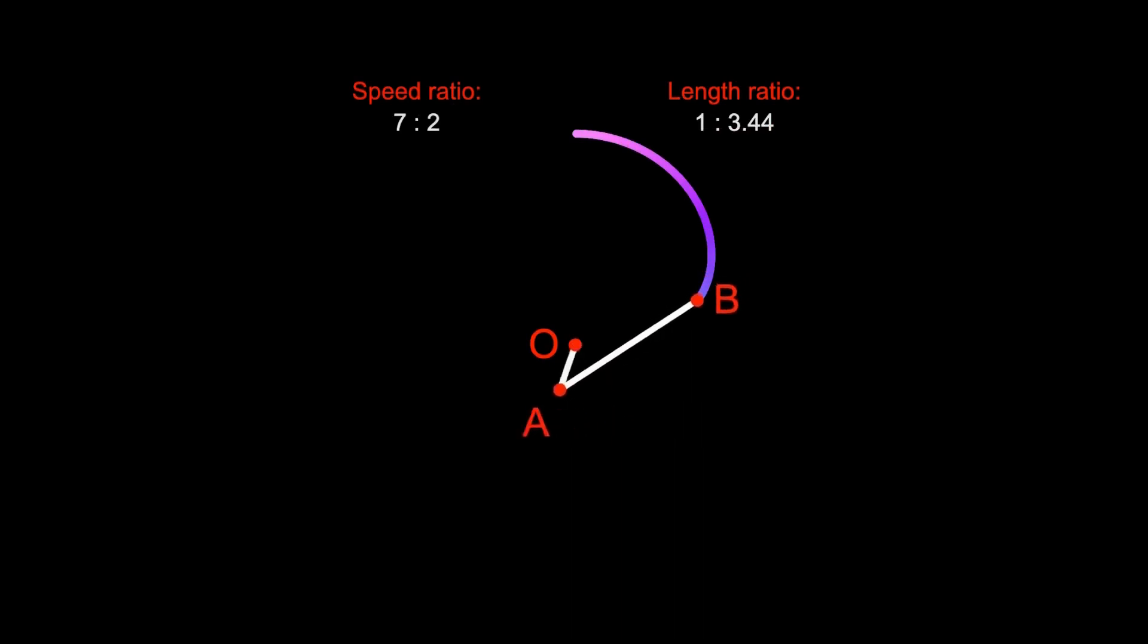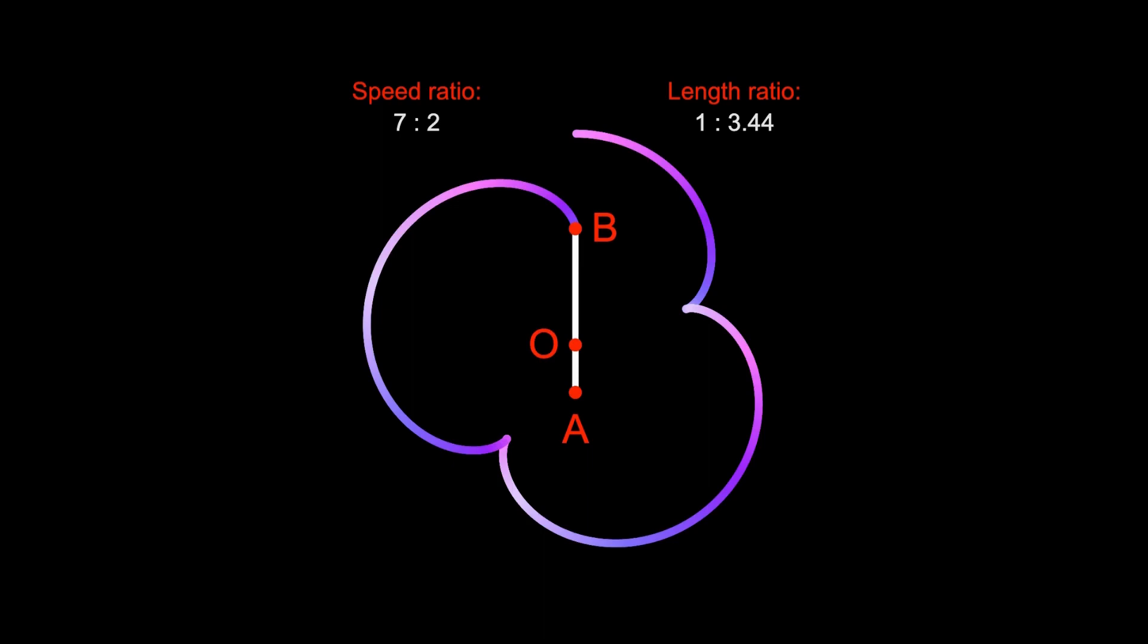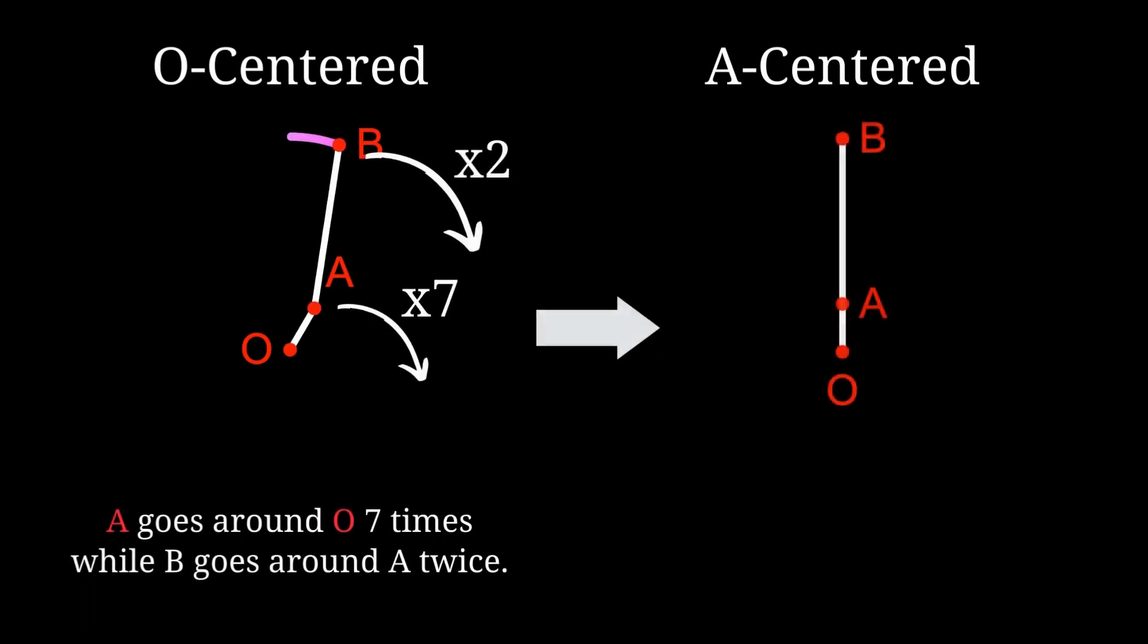Let's take a closer look. It looks like a petal is complete when O, A, B are in a line and O is between A and B. To better understand this, let's add an A-centered perspective. A goes around O is equivalent to O goes around A in the same speed.